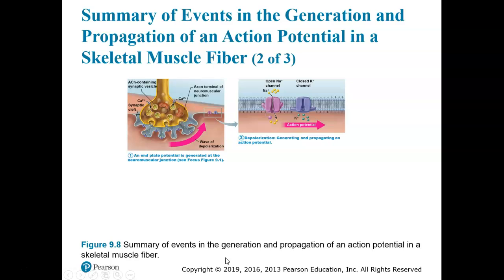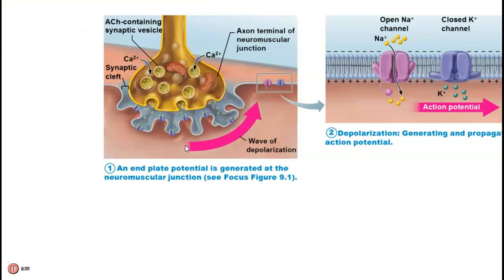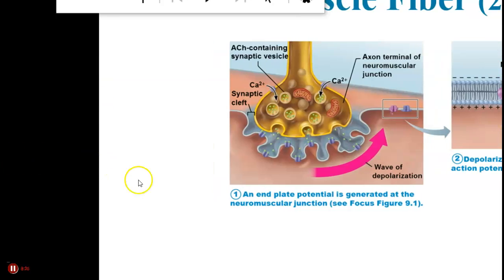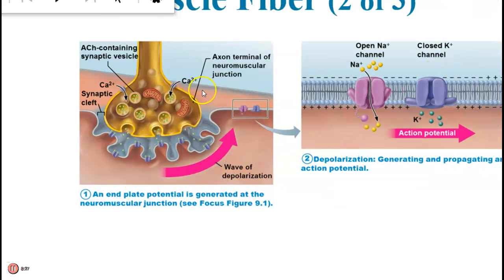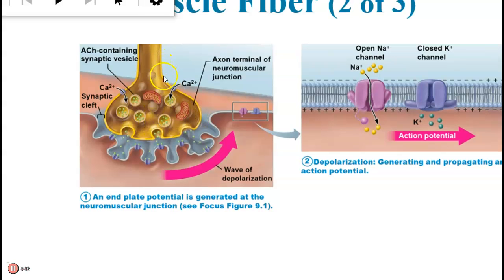These are the events that generate an action potential, which leads to a contraction in a skeletal muscle fiber. First, the action potential arrives at the axon terminal. Calcium enters and stimulates the acetylcholine synaptic vesicles to release acetylcholine into the synaptic cleft.